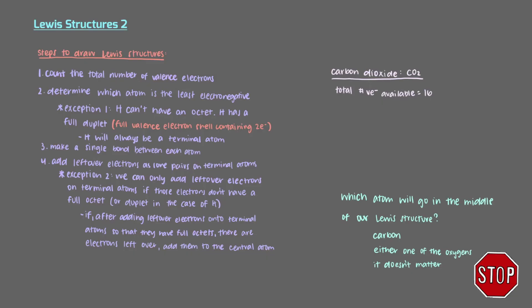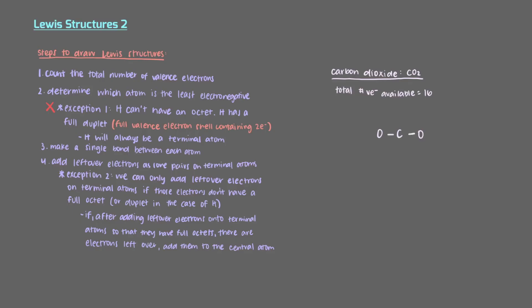Which atom will go in the middle of our Lewis structure? Carbon is the least electronegative atom in carbon dioxide, so it will go in the middle. Notice that we don't have any hydrogens in this molecule, so we don't have to consider any of the exceptions we just talked about. Like always, we'll start with putting a single bond between each atom. Since we drew two bonds, we subtract 4 electrons from our total, which means we have 12 more electrons to work with. Next, we will put the leftover electrons around the terminal atoms, and as we do this, we use up all of the electrons we had left.